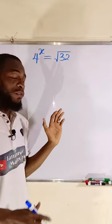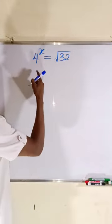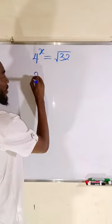If 4 to the power of x is equal to square root of 32, we are going to find the value of x. But you should know that 4 is the same thing as 2 squared.